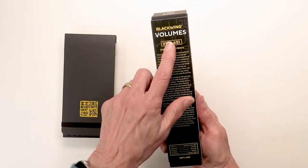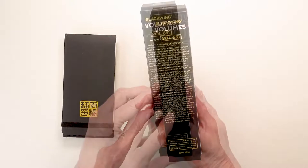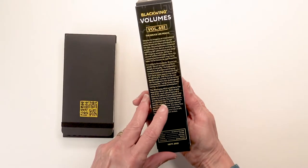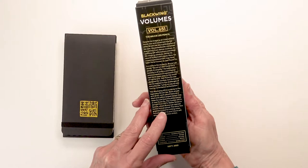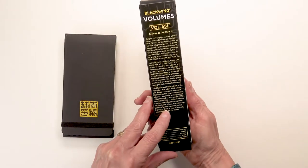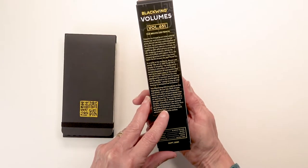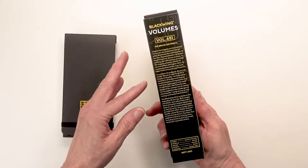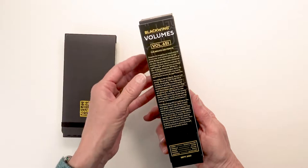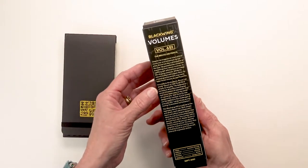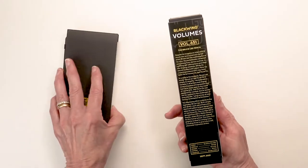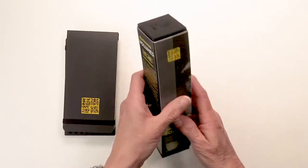This is volumes number 651. 651 is the street number from the spot in Seattle where Bruce Lee opened his first formal martial arts studio. In addition to being an international movie star and acclaimed martial artist, he was also a philosopher and did a lot of writing of many things in a particular kind of notebook, just like this.